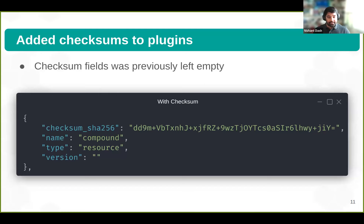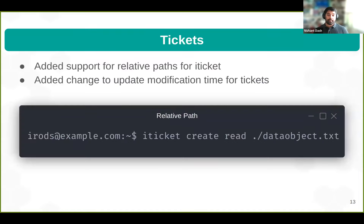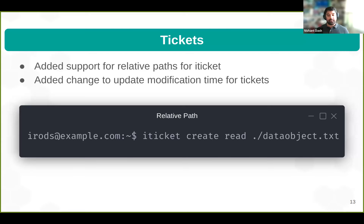Those were the things I did for the zone report. After I finished those issues, I was about halfway through the internship, so I started to look at other issues in the core server. I worked on a couple of ticket issues. First, I added support for relative paths for iTicket, which allows you to execute commands such as the one shown. In the past, if you wanted to create a ticket for a collection or data object, you would need to provide an absolute path, but now you can use relative paths. I also fixed a bug where the modification time for tickets was not updated — that bug was found by Ganning, one of our other interns. Now, whenever you modify the ticket, the modification timestamp changes.